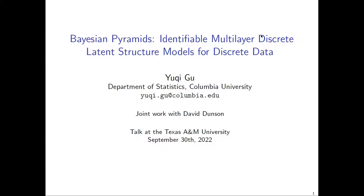She has very general research interest in latent variable models, statistical machine learning, and psychometrics. Some of her specific research interests are in discrete latent structures, tensor decompositions, multivariate categorical data, and graphical models among other things. She has already done lots of good work in all these areas that have appeared in top journals. Today she's going to tell us about her recent work on so-called Bayesian pyramids, on multi-layer discrete latent structure models for discrete data. Dr. Yu-Chi Goh, please join me. Thank you so much for the very kind introduction, and thank you Anurban for inviting me here. It's really my great pleasure to speak at the statistics seminar at Texas A&M.